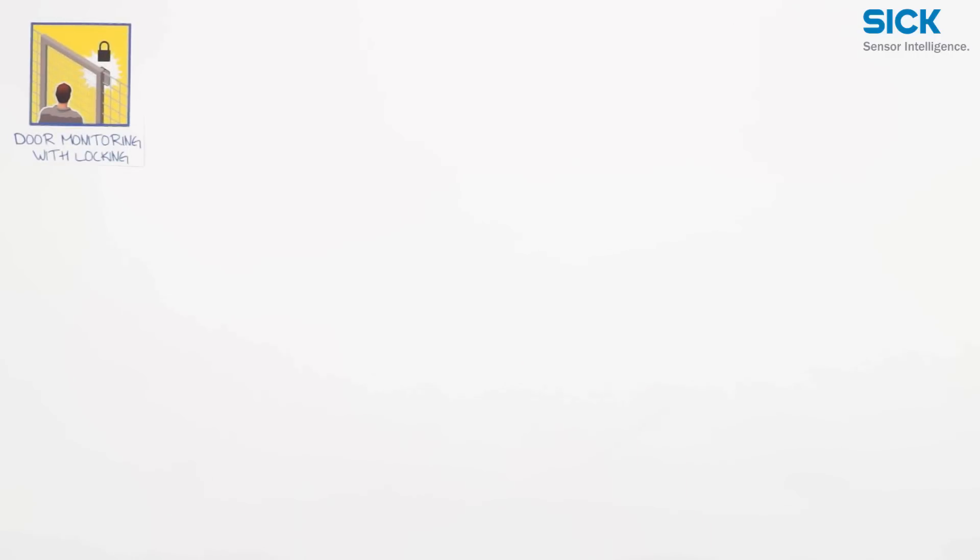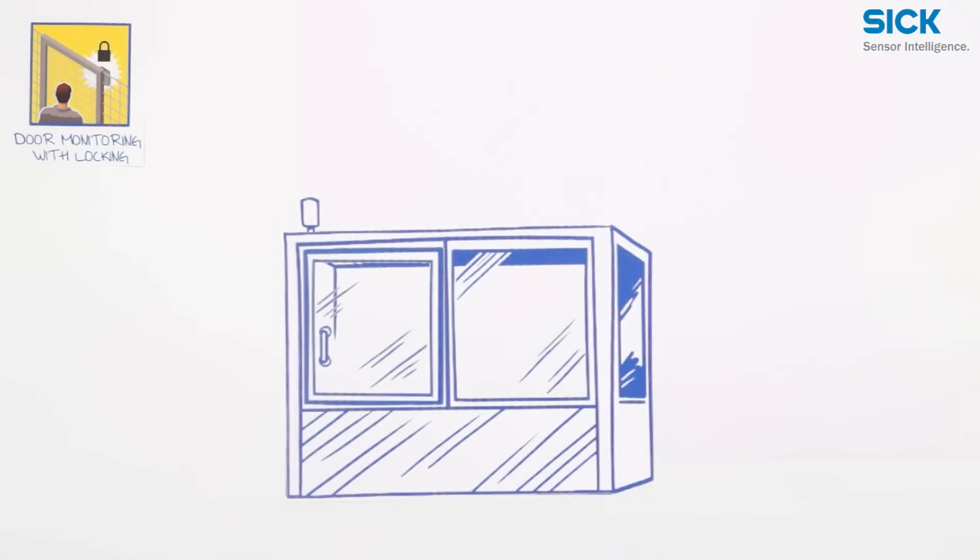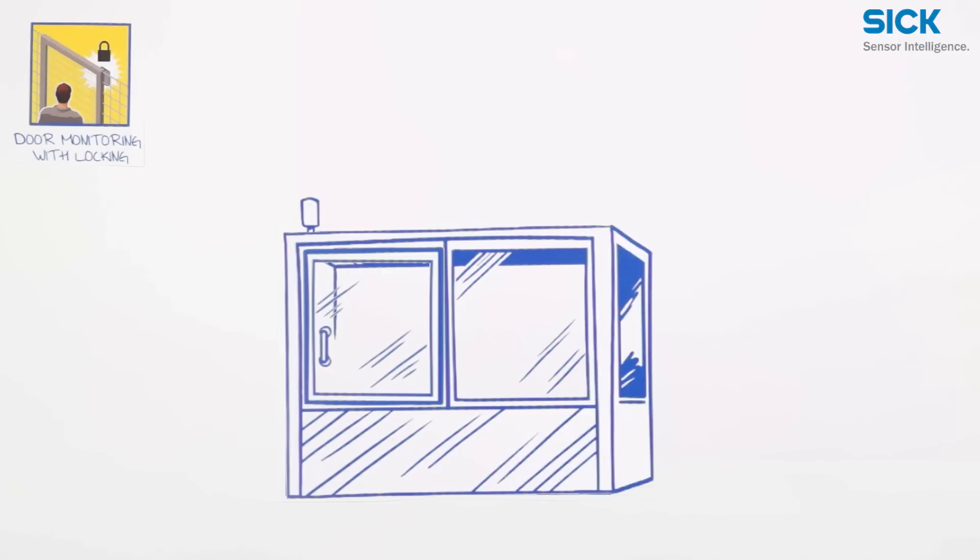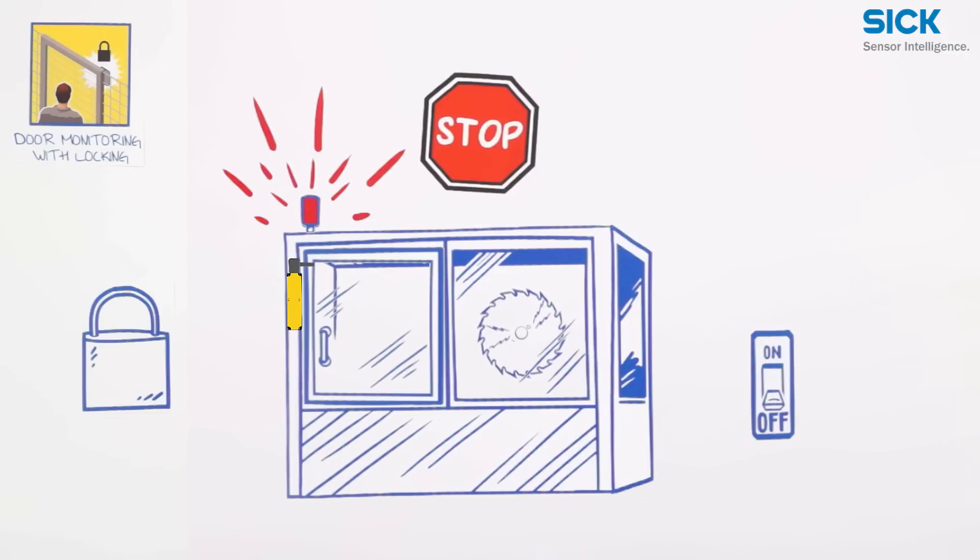Now let's go to the next safety task. It's not always enough to only monitor the door. For some applications, it is also necessary to prevent access to the machine, for example, to protect a fragile manufacturing process from interruptions, to protect people from overrun movements of the machines that cannot be stopped immediately.